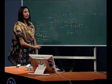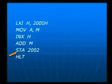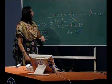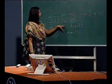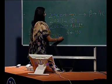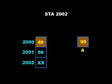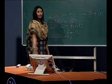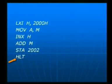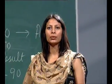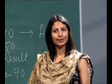The second last instruction is STA 2002. We had left this location for storing the result. In the case of STA 2002, the contents of the accumulator will be transferred to location 2002, so the contents of location 2002 will be 90. The last instruction is the HALT instruction. This instruction is used to end the program. By all this, we came to know how to make an assembly language program by using various instructions of 8085. Thank you.